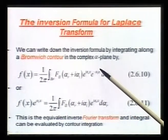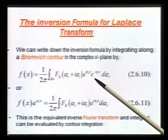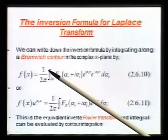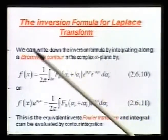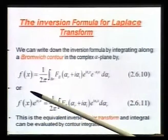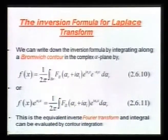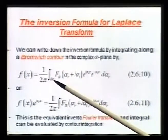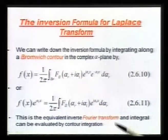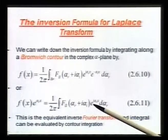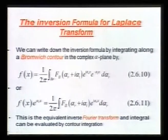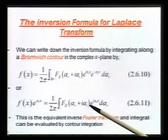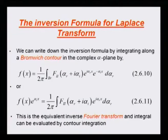If I take a contour along which the imaginary part of alpha is constant, I can take this out and put it on the other side. That is what we are talking about: if we follow a contour which we call the Bromwich contour, for which alpha-i is constant, then this is the formula. This is nothing but your usual Fourier transform, except that the argument is complex. Unlike in Fourier transform where the argument is the real circular frequency, here it is a complex frequency.